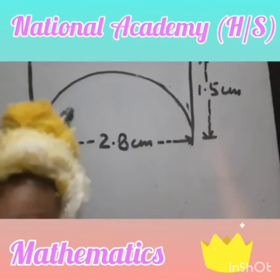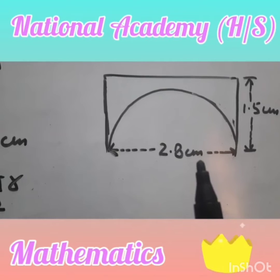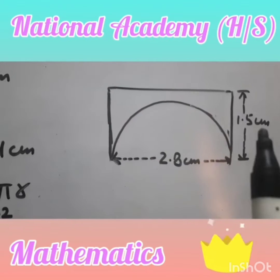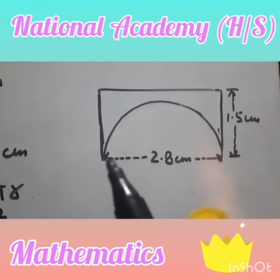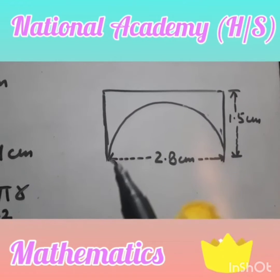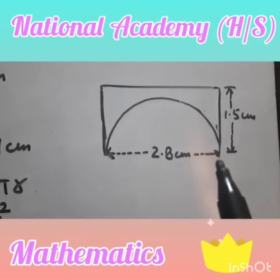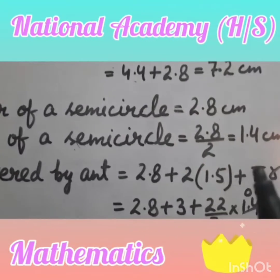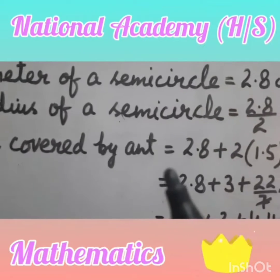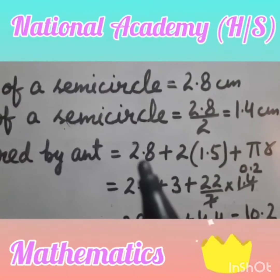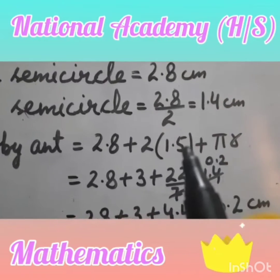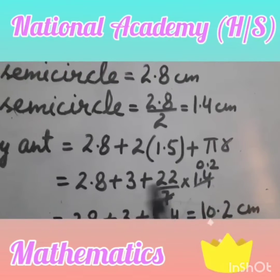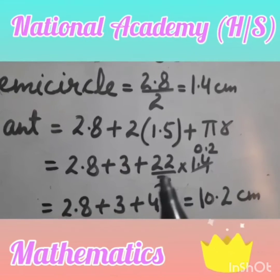The second piece has a semicircle with diameter 2.8 cm, so the radius is 1.4 cm. The piece also has width 1.5 cm (two times) and length 2.5 cm. The path consists of two widths, one length, and one semicircle. So total = 2.8 + 2 × 1.5 + 2.5 + π × 1.4.